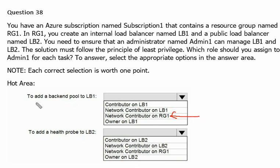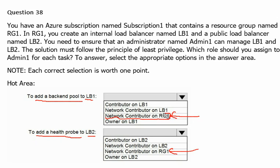For the exam perspective, please remember that Network Contributor permission is required on Resource Group 1 — or the resource group in general — to add the backend pool. The same applies to adding the health probe on load balancer 2: it also requires Network Contributor permission on the resource group. That is the answer for the exam, and I have also shown you a practical demonstration.